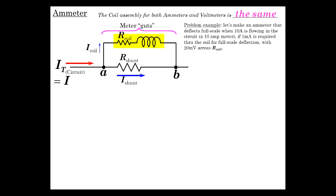So the example we're going to do is a meter that records full scale where the meter swings all the way at 10 amps. And 1 milliamp is required through this coil to cause that full scale deflection.